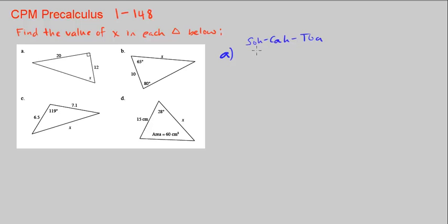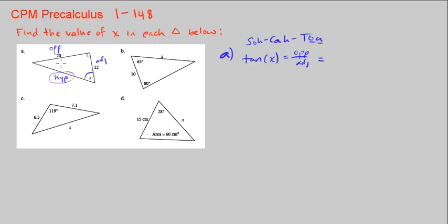We can use our trig functions — sine, cosine, and tangent. This is just the memory tool. Looking at angle x, we know right here this is the hypotenuse. We know 20 is opposite and 12 is adjacent. Since the hypotenuse side is unknown, we don't want to use it. Which one uses opposite and adjacent? Opposite and adjacent is tangent. So tangent of x is equal to opposite over adjacent, or 20 over 12.